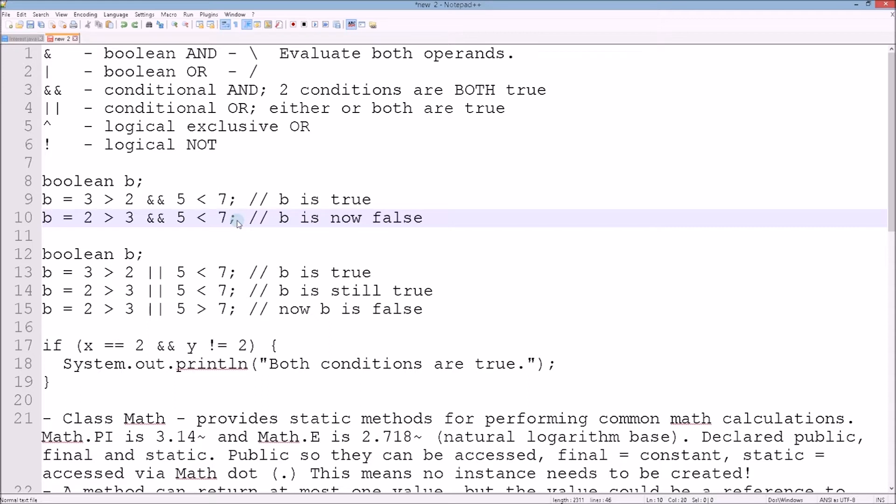The same thing with the conditional OR. On the first line we have b: 3 greater than 2, 5 less than 7. Then b: 2 greater than 3, 5 less than 7. It's still true because this is an OR statement - it evaluates the first one then the second. 2 is not greater than 3, but 5 is less than 7, so b is still true.